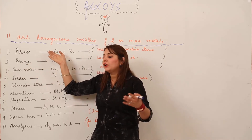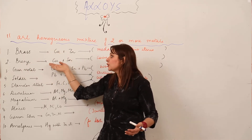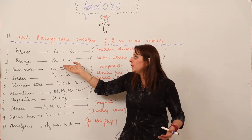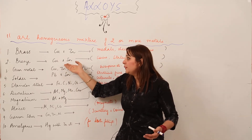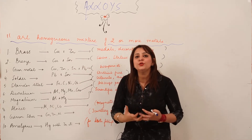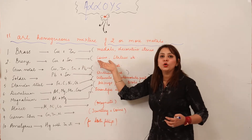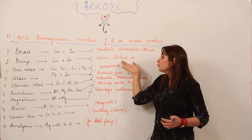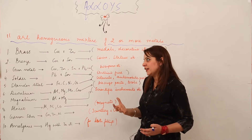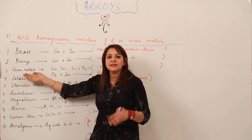The second alloy is bronze, another alloy of copper. In bronze, copper is mixed with tin (Sn). It is used for making coins, statues, decorative items, and so on.